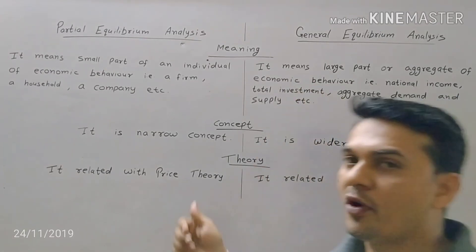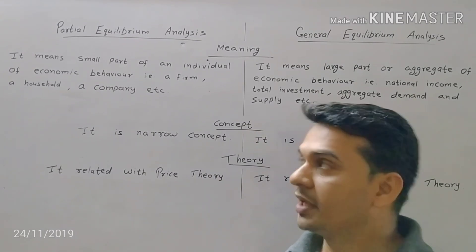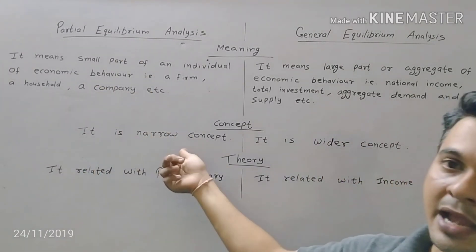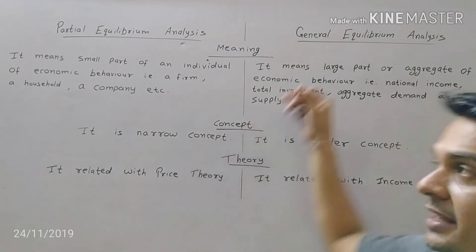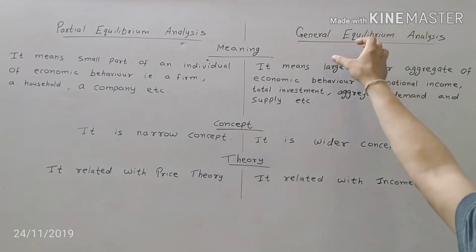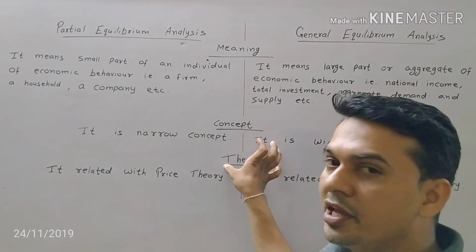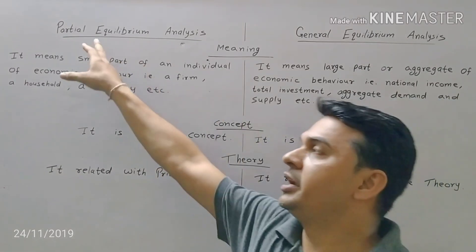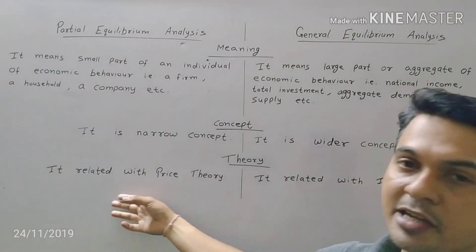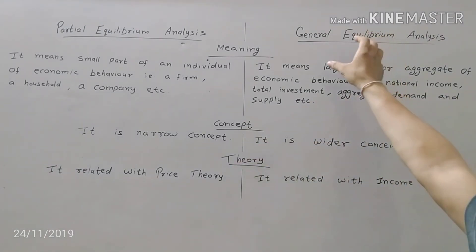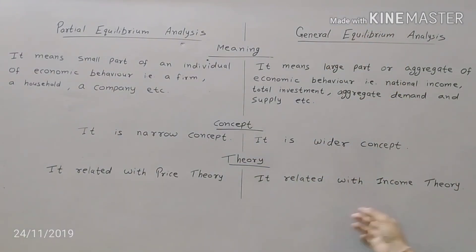Next point — concept. In partial, it is a narrow concept, and in general, it is a wider concept. The next is Theory. In partial, it is related with price theory, and in general, it is related with income theory.